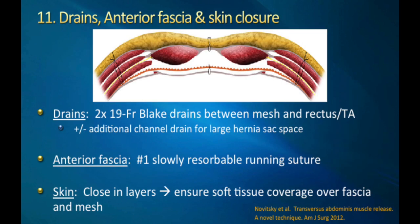I commonly place two 19 French Blake drains for a TAR, or a single Blake drain for a retrorectus repair, and then close the anterior fascia with a number one slowly resorbable suture, followed by the skin in multiple layers. The important thing is to ensure soft tissue coverage over your fascia.